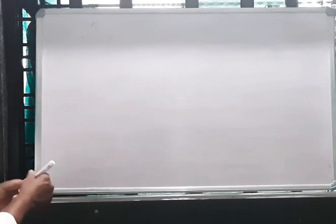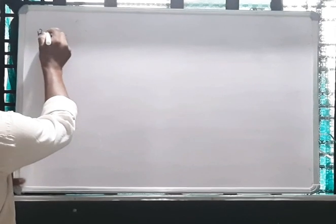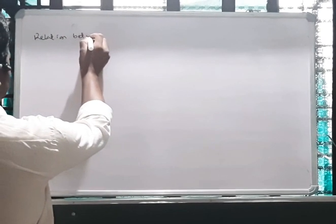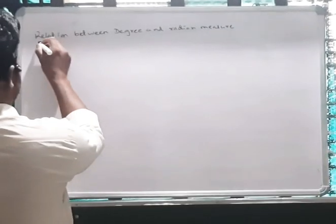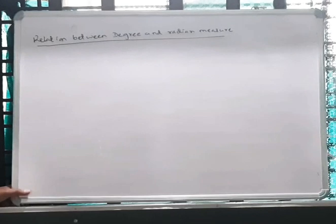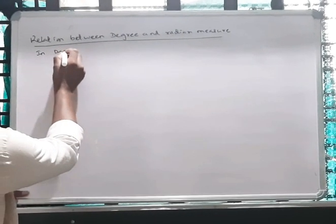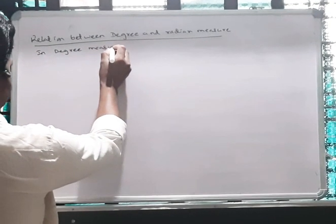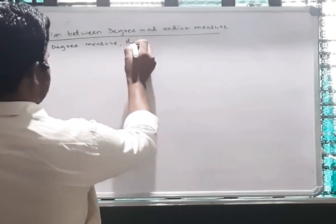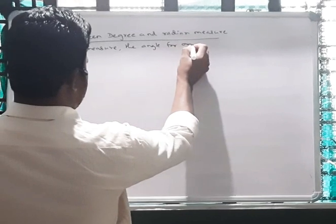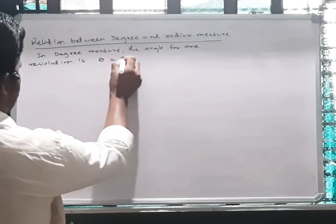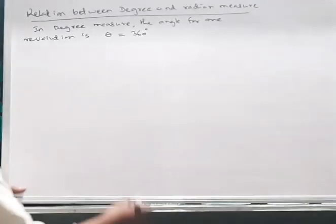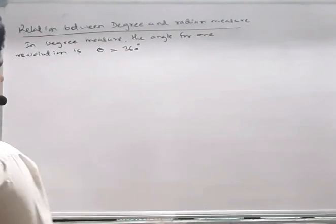We studied degree and radian measures. Today we shall study the relation between degree and radian measure. In degree measure, the angle for one revolution is theta equal to 360 degrees.